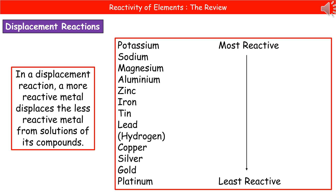Just as we saw with halogens and their displacement reactions, we also have displacement reactions with metals. A more reactive metal will displace a less reactive metal from solutions of its compounds. On the right, you've got the reactivity series. At the very top we have our most reactive, which is potassium, and we work our way down to the least reactive, which is platinum. Hydrogen is included in the series — it's not a metal, but it gives a reference point to know what's going to react with water or acids. If a metal is more reactive than hydrogen, we will see a reaction; if it's below hydrogen, we won't.